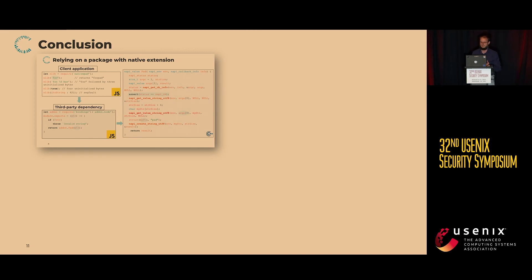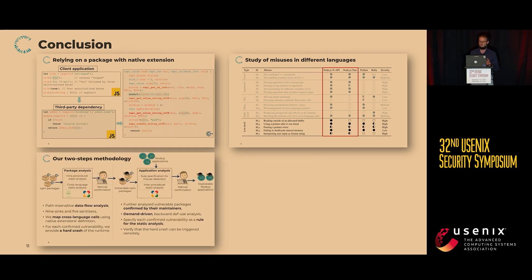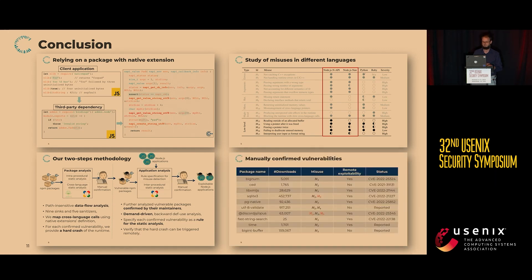To conclude, native extensions are a relatively popular mechanism in scripting languages that causes all kinds of subtle security vulnerabilities. There are important differences across the scripting languages, and Node.js seems to be the most permissive, allowing the misuse of native extensions. We propose a two-phase methodology that finds end-to-end vulnerabilities in web applications triggerable remotely, and we found quite a few vulnerabilities, some affecting web applications.